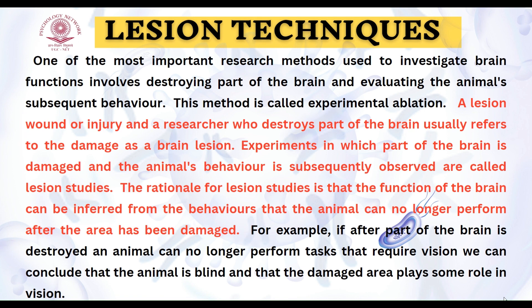Let's start with the lesion methods. A lesion is a wound or an injury. The lesion technique means the surgeon or researcher is making this wound or injury in an animal under study. Lesion techniques are not done on humans — they are usually done on animals. The basic rationale is that the function of the brain can be inferred from the behaviors that the animal can no longer perform after an area has been damaged.